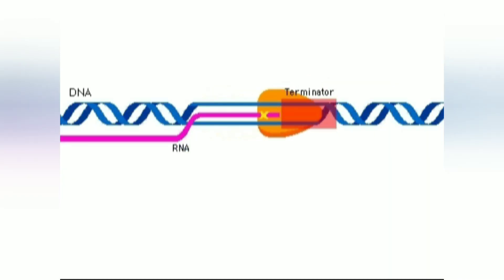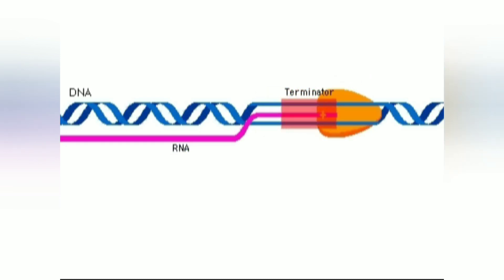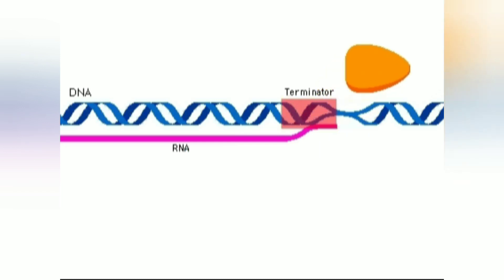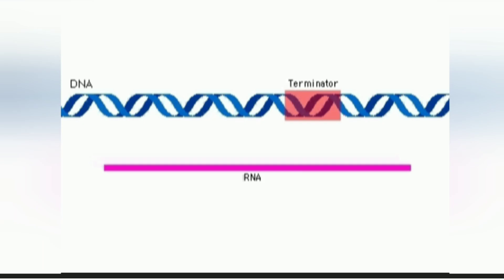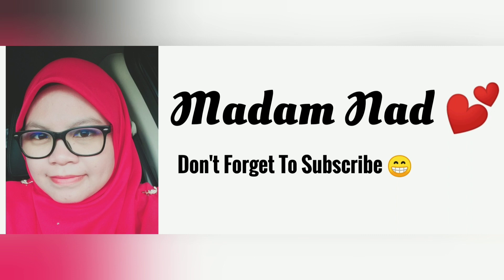During termination, RNA polymerase arrives at the terminator and stops transcribing the DNA strand. RNA polymerase detaches from the DNA, and the pre-mRNA is released. The pre-mRNA consists of introns and exons. It then undergoes RNA splicing, during which the intron regions — non-coding regions — are removed, so that mature mRNA consists only of exons with coding regions. Thank you for watching, see you in the next video.